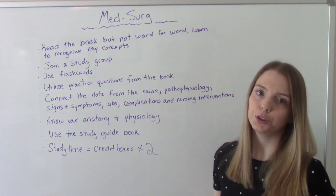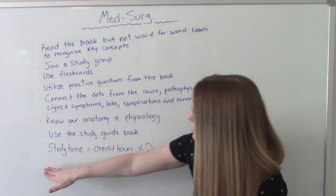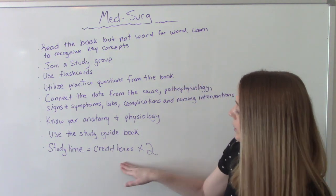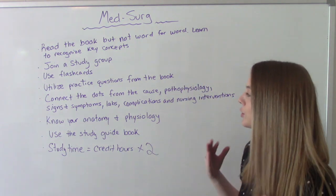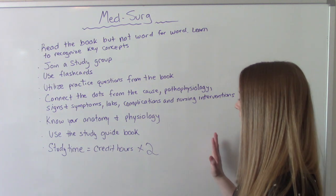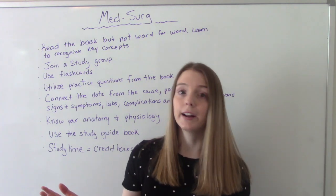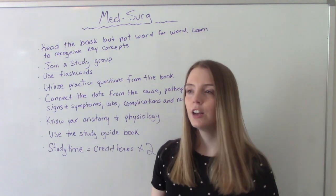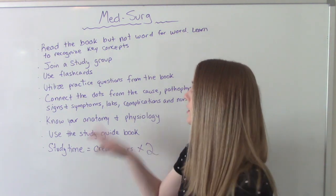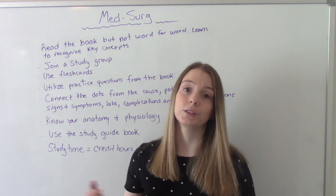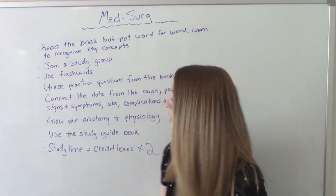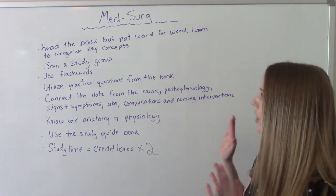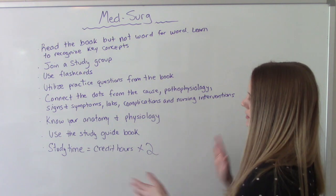How long should you study? Your study time per week is equal to your credit hours times two. So if your med-surg class is a three credit hour class, three times two is six — you should be studying for this class six hours a week. That's how much studying you need to do.